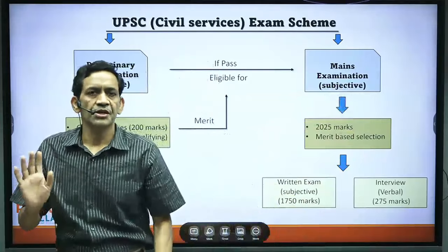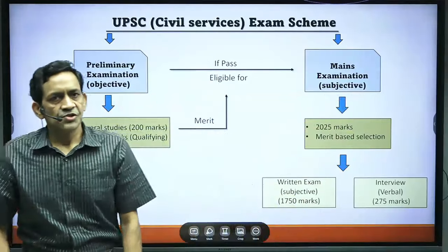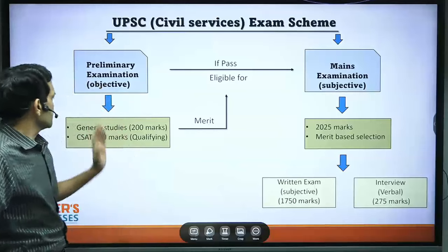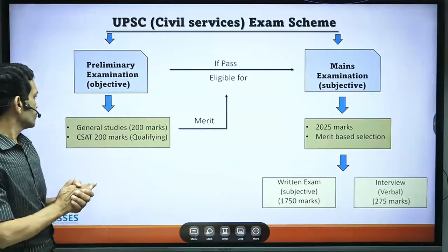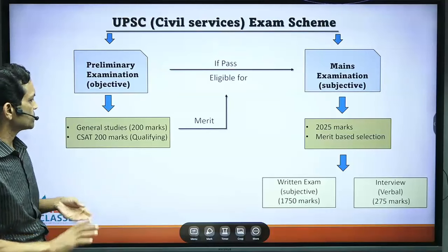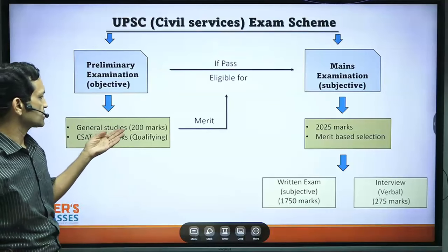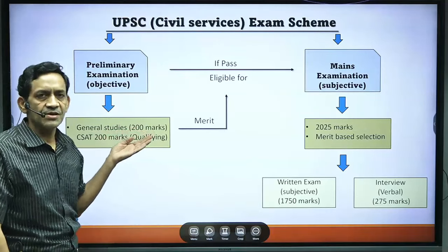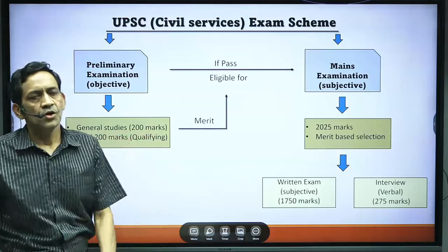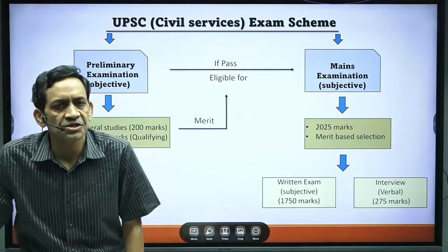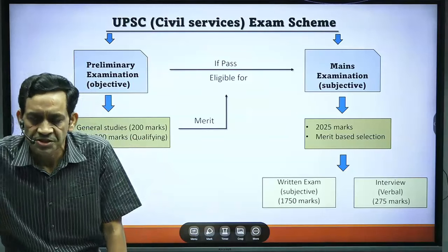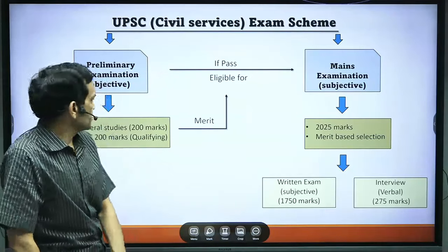The mains examination is subjective type, meaning you have to write detailed answers. In prelims there are two subjects: General Studies and CSAT. General Studies is 200 marks and is the main exam. CSAT is qualifying in nature — out of 200 marks you need to score around 67–70 marks.